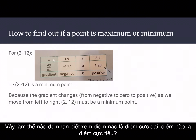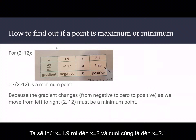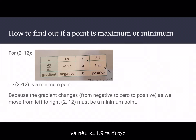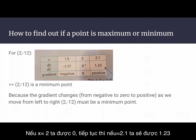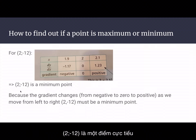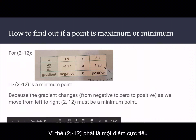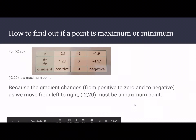To confirm whether (2, -12) is a maximum or minimum, we use a table of values. We test x equal to 1.9, x equal to 2, and x equal to 2.1. The gradient values are minus 1.17, then 0, then positive 1.23. Since the gradient changes from negative to zero to positive as we move from left to right, (2, -12) is a minimum point.